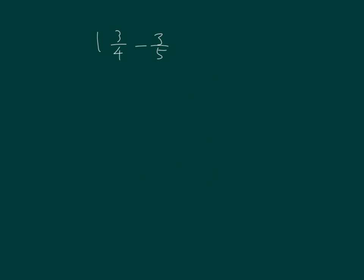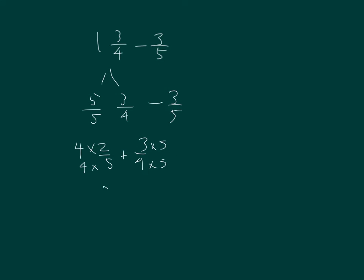Let's think of some ways we can solve this problem: one and three-fourths minus three-fifths. I could rename the one as five-fifths, and then I still have three-fourths. So I have five-fifths with three-fourths minus three-fifths. Five-fifths minus three-fifths is two-fifths, so plus three-fourths. Getting a common denominator, I can get twentieths. Four times two is eight-twentieths along with fifteen-twentieths, which equals twenty-three-twentieths, which is one and three-twentieths.